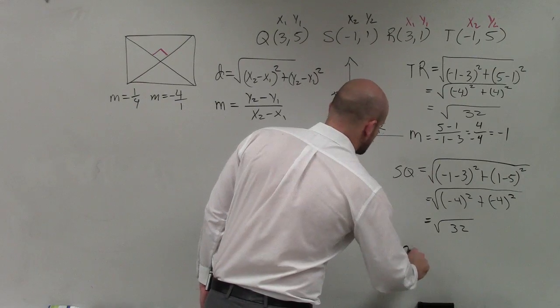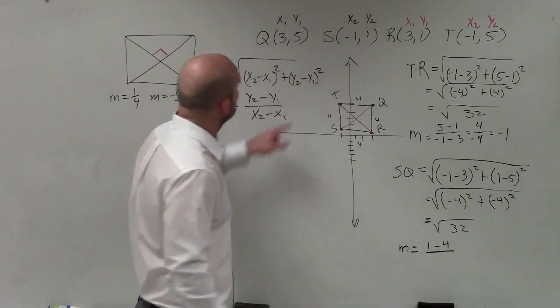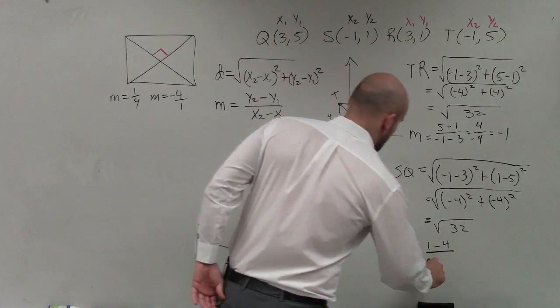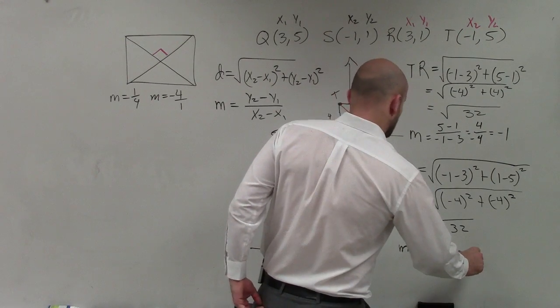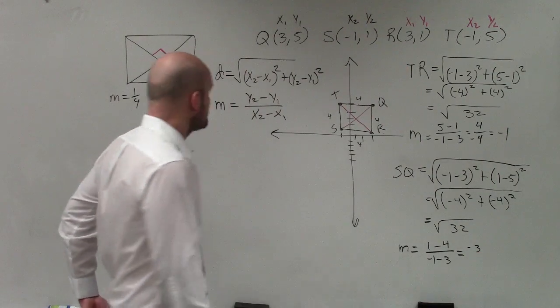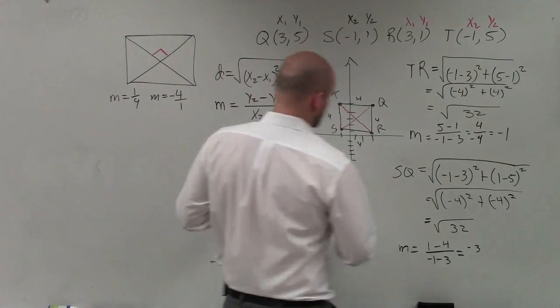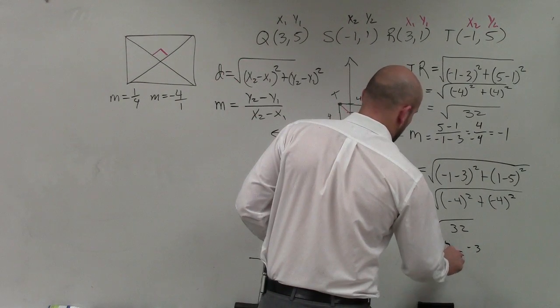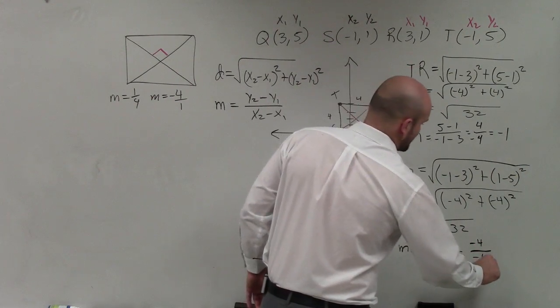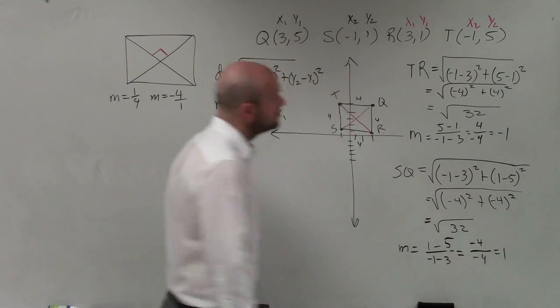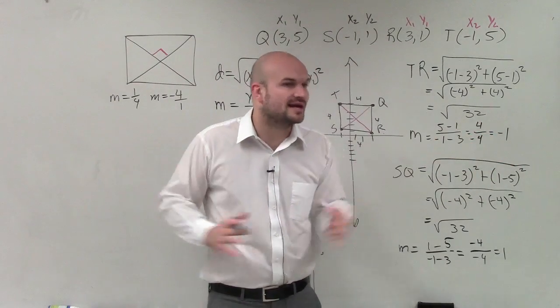So then I go and determine the slope here, which is (1 minus 4) over (negative 1 minus 3). And that equals 1 minus 4, which is negative 3 over negative 1—no, that's not right. What is that? Negative 1 minus 5. I was thinking ahead. 1 minus 5, which is negative 4, over negative 1 minus 3, which is negative 4, which equals positive 1. So there you go, ladies and gentlemen. These are opposite slopes and they are reciprocals of each other: 1/1 and negative 1/1.